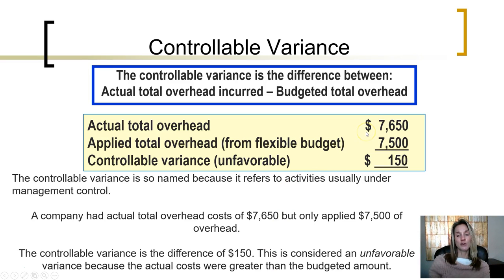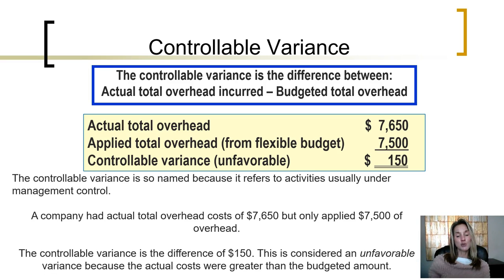If actual total overhead incurred was $7,650, the amount of applied overhead from the flexible budget was $7,500, resulting in a variance of $150. The controllable variance is considered unfavorable because the actual costs were greater than the budgeted amount for total overhead.